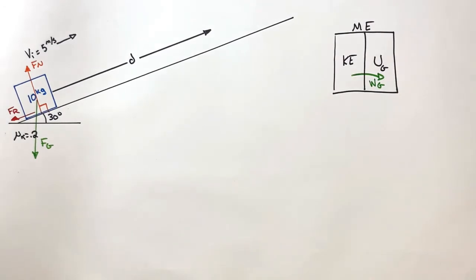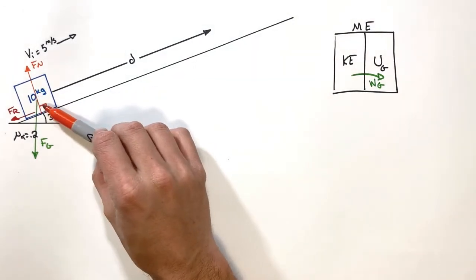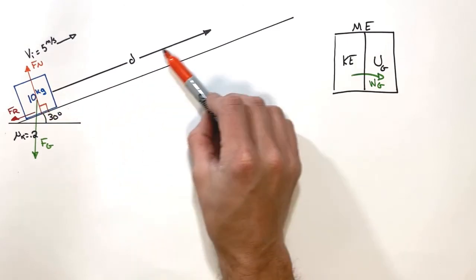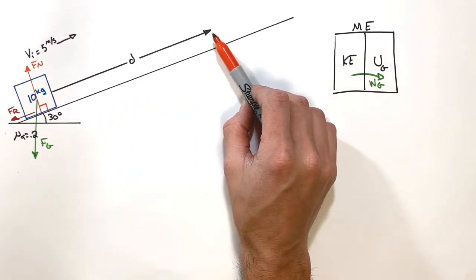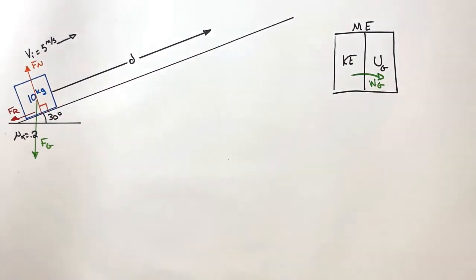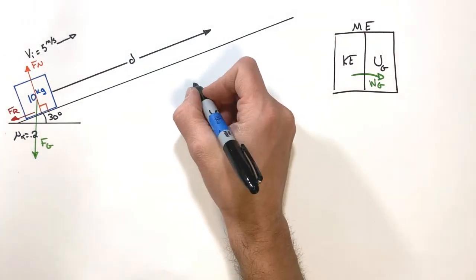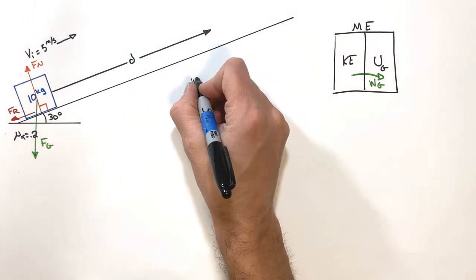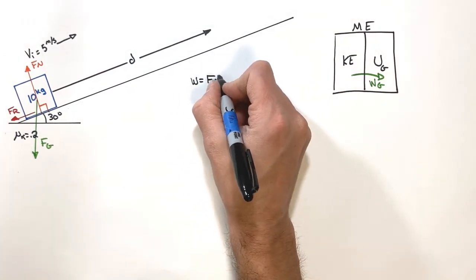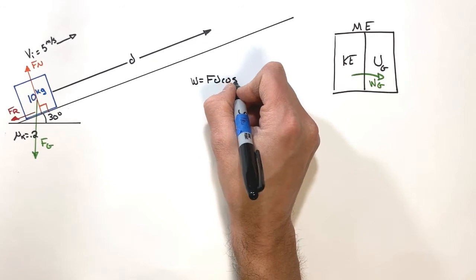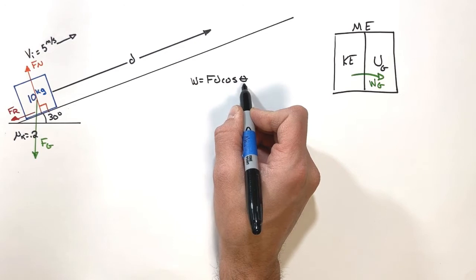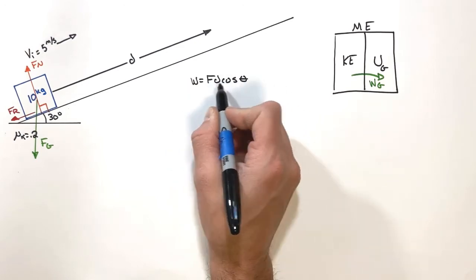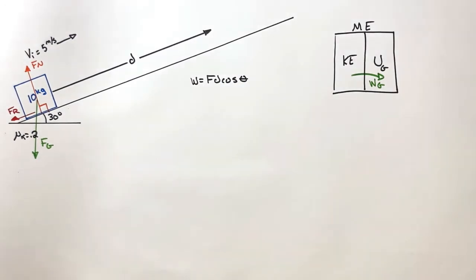The normal force is perpendicular to the displacement, so it's not going to do any work on the block. Looking at our equation for work — work equals F·d·cosine(θ) — the normal force is at a right angle to the displacement, so there is no work done by the normal force.